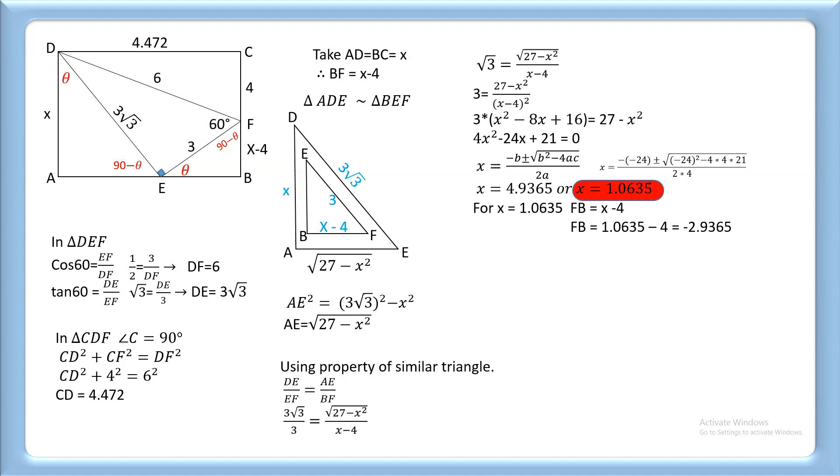So we take x = 4.9365. Now AD = x = 4.9365 and CD = 4.472.